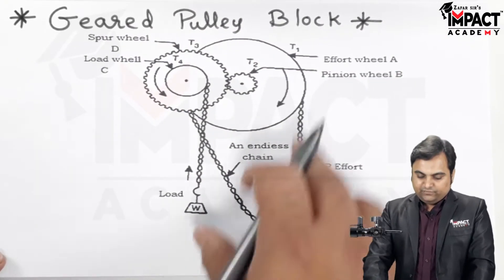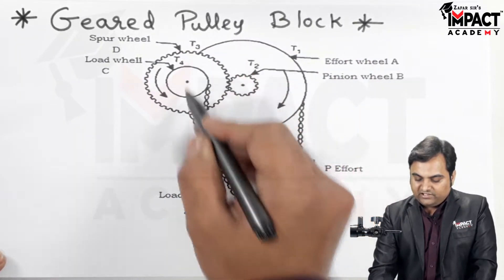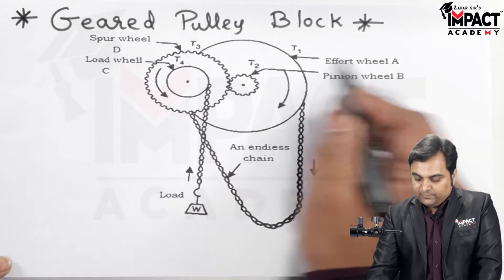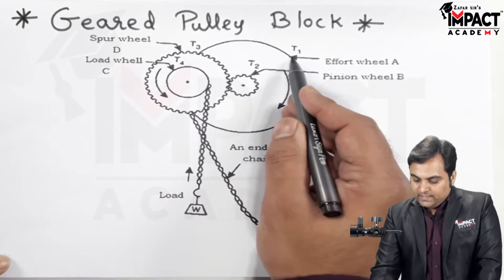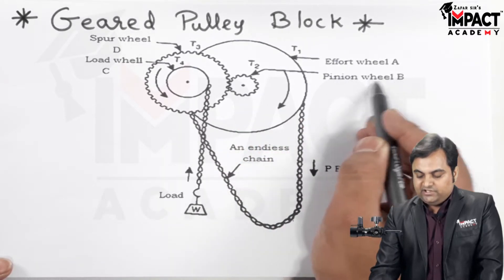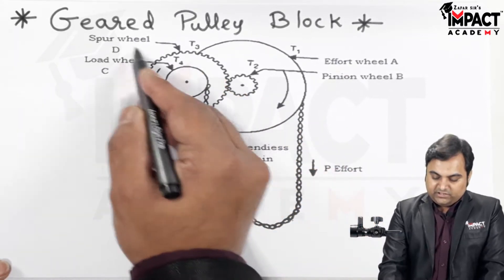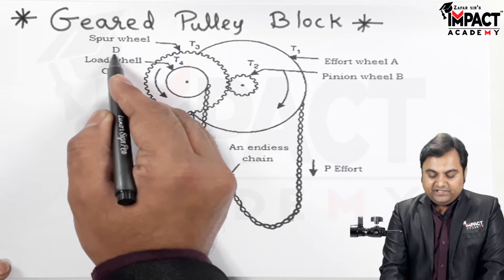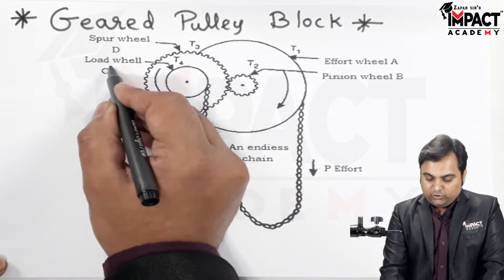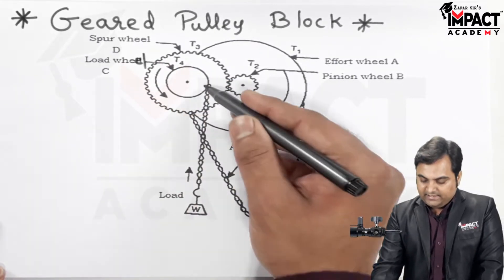First I'll explain the construction of this geared pulley block. In the diagram, all these pulleys have a number of teeth. T1 is the number of teeth on the effort wheel, which is the biggest wheel. This bigger wheel is in contact with a smaller pinion, called wheel B, having number of teeth T2. This pinion is in mesh with a spur wheel D having number of teeth T3. The spur wheel is in contact with a load wheel having number of teeth T4, and at the end there is a chain attached.